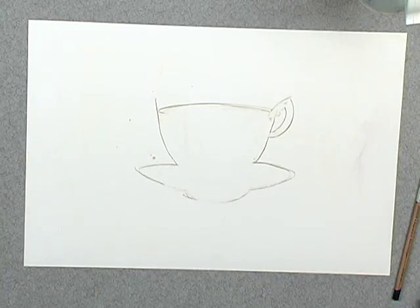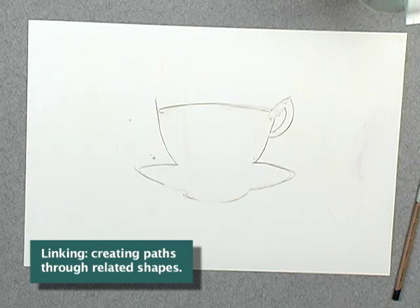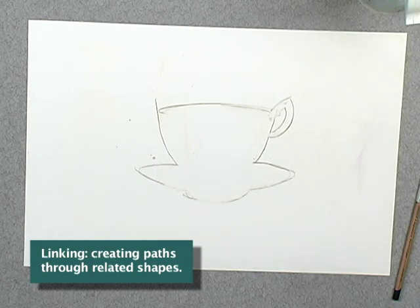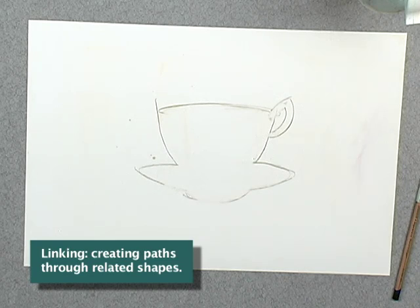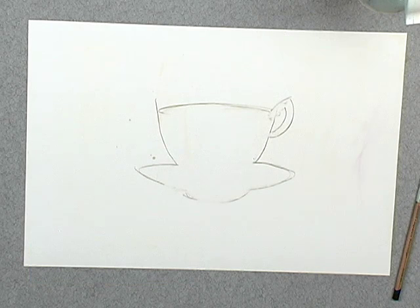What I've done, in a sense, is that I've linked them — I've linked them by taking out that dimensional object. It's a simple way to deal with it, and you can do the same thing with line.